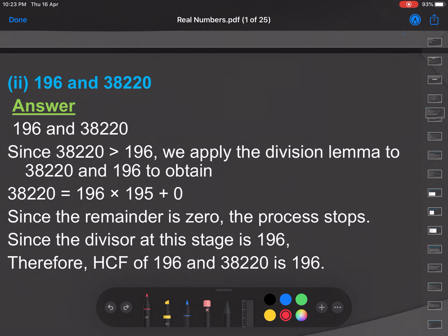Another example for Euclid division lemma algorithm: 196 and 38220. We have to find the HCF of these two positive integers.